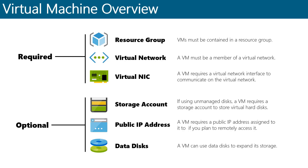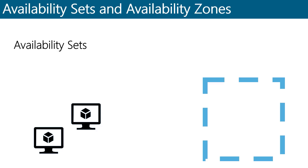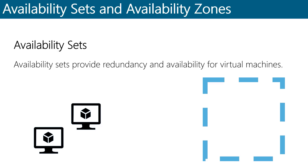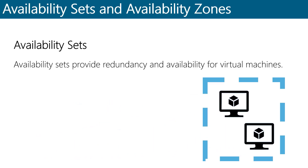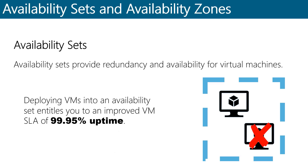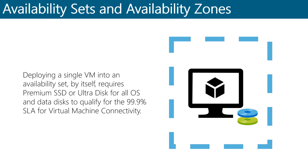So as you can see, there are quite a few things to consider when deploying a virtual machine in Microsoft Azure. Welcome to Availability Sets and Availability Zones. In this lecture, we're going to look at what they are, what they offer, and how they differ. Availability sets provide redundancy and availability for virtual machines. When you deploy at least two virtual machines into an availability set, Microsoft ensures that at least one of them will remain available during planned or unplanned maintenance events, entitling you to a 99.95% uptime SLA.